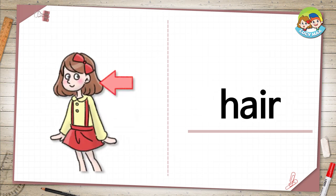The next word is hair. In the picture, an arrow is pointing to the girl's hair. It is brown. She wears a red hairpin in her hair. What color is your hair?